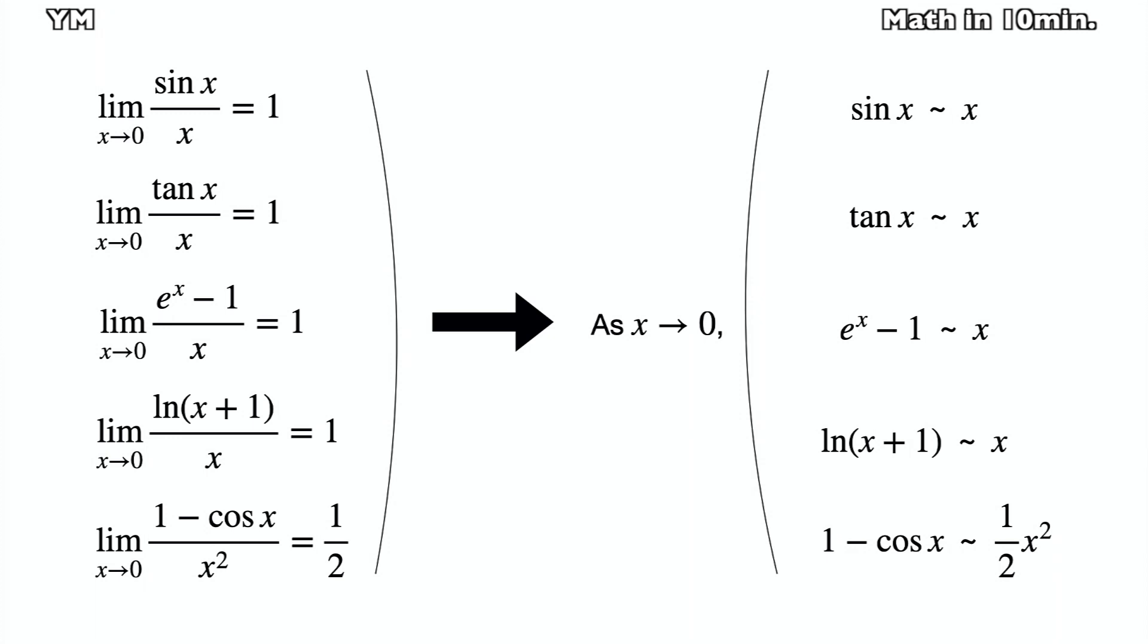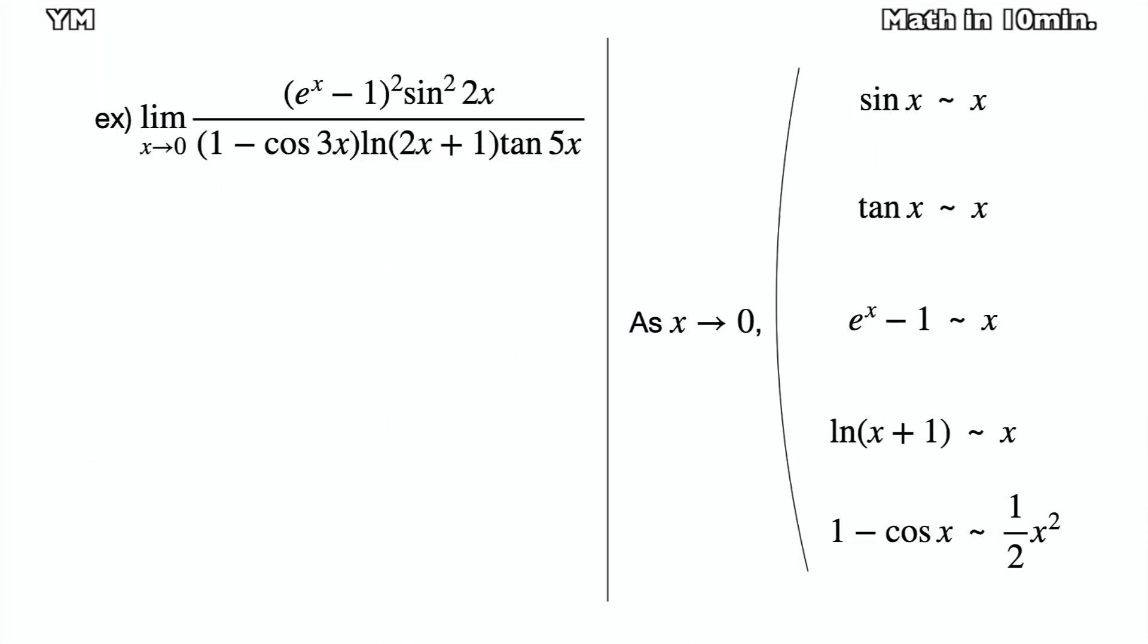Not only sin x, but tan x, e^x minus 1, and ln(x+1) become similar to x. So we can let these be x. In case of 1 minus cos x, it becomes similar to 1/2 times x squared. Now let's go back to the previous problem and redo it.